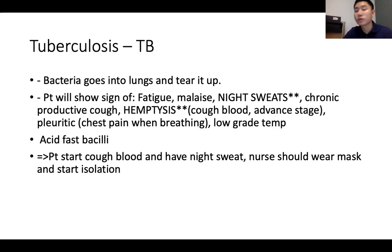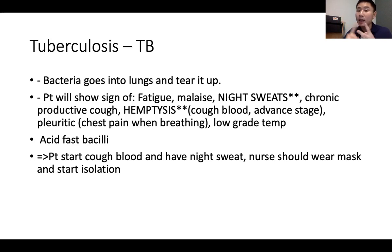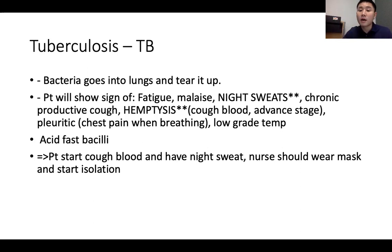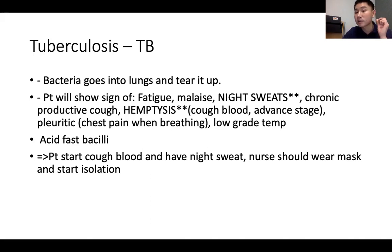Tuberculosis (TB): bacteria enter the lungs and cause damage. Signs and symptoms include fatigue, malaise, night sweats — a big indicator — chronic productive cough, and hemoptysis (coughing blood) at advanced stages. The patient may also have pleuritic chest pain when breathing and low-grade temperature. TB is caused by the acid-fast bacilli strain. The nurse should wear a mask and initiate isolation.